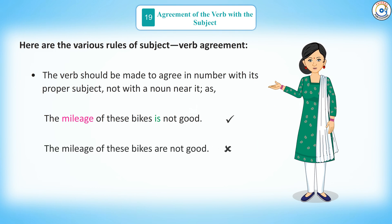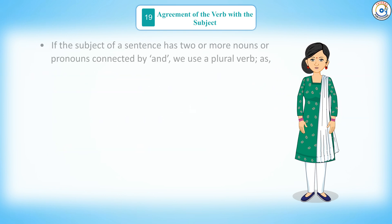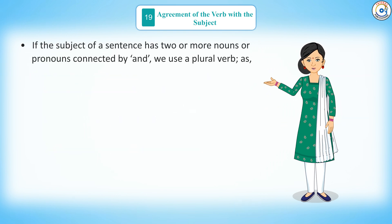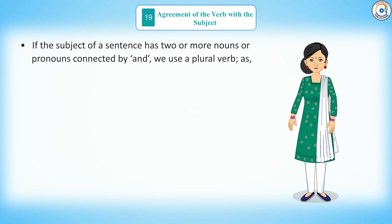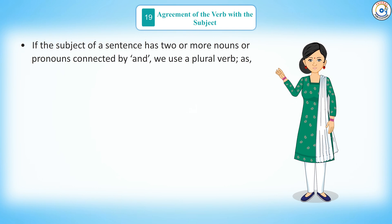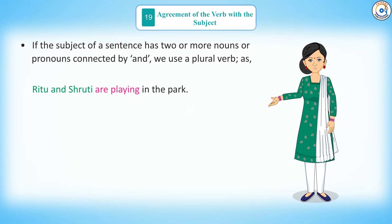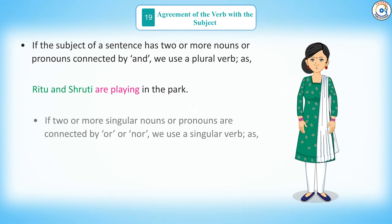Rule 2: if the subject of a sentence has two or more nouns or pronouns connected by 'and', we use a plural verb — as in, Ritu and Shruti are playing in the park.